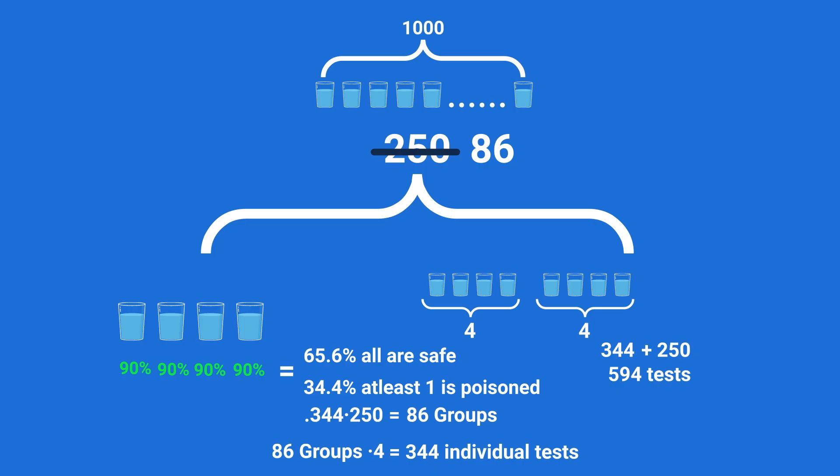So that's the answer, but now let's see why we chose groups of four instead of something else, and what to do when we don't know the exact percent chance that a certain drink is poisoned. Basically we're gonna do the same thing again, but the generic case with variables rather than specific numbers.